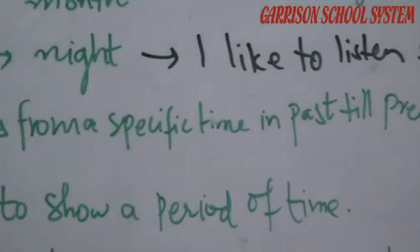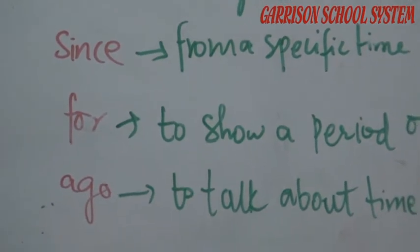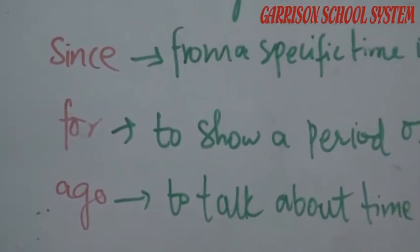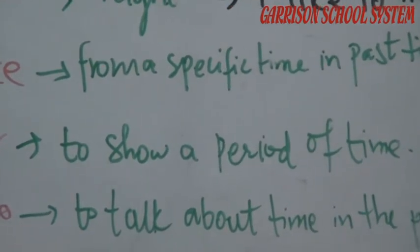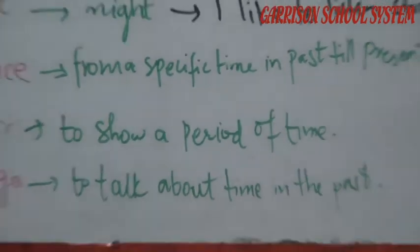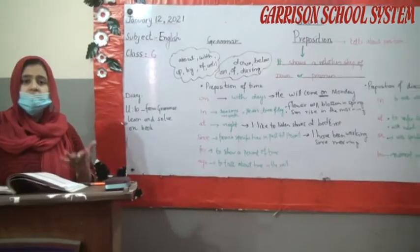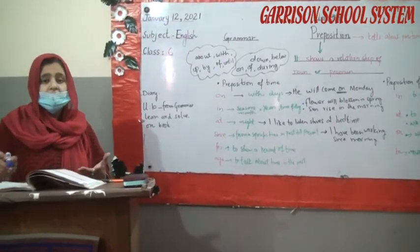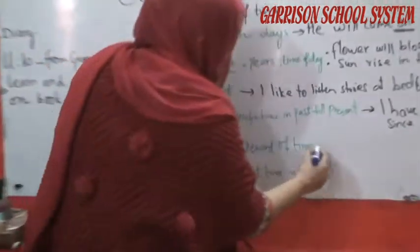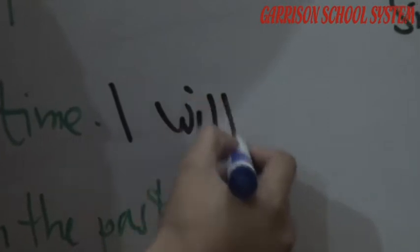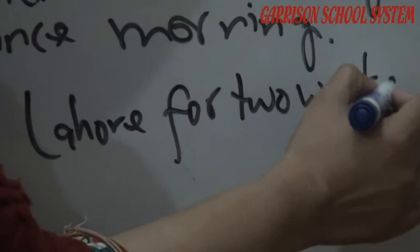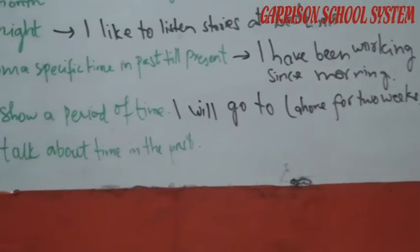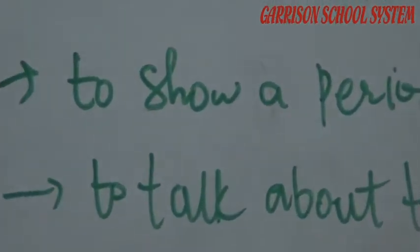Next is 'for' — to show a period of time, meaning how long something has been going on, like two years, three years, two months. When we want to share a duration, we use 'for.' For example: 'I will go to Lahore for two weeks' — meaning I will go to Lahore for a period of two weeks. Here 'for' is the preposition.